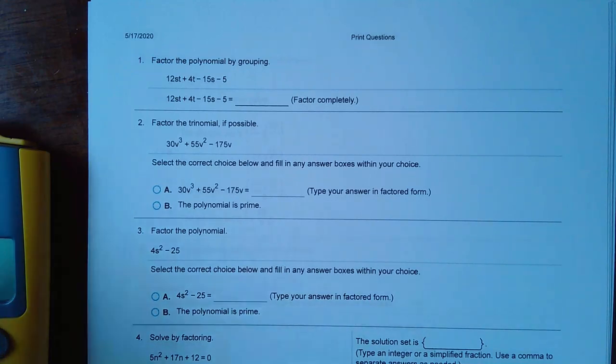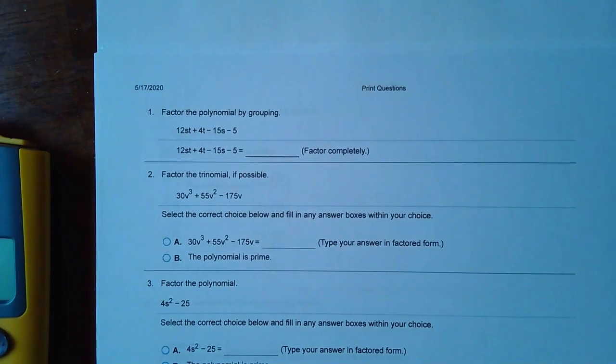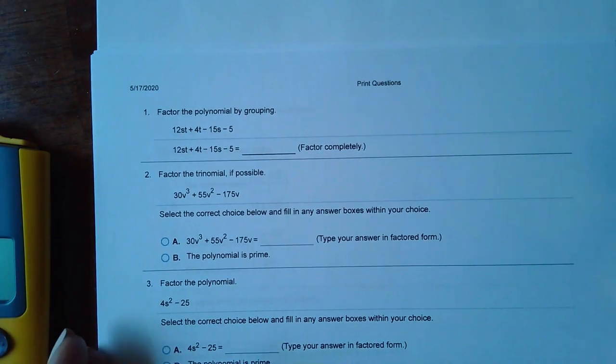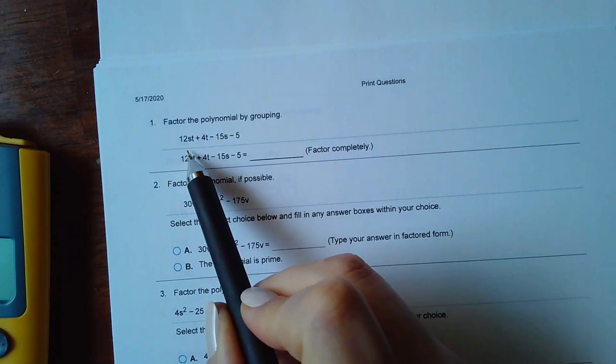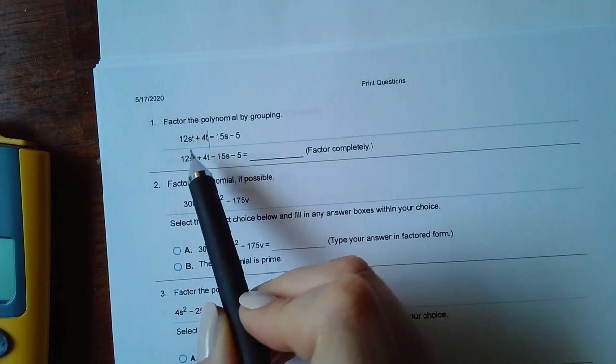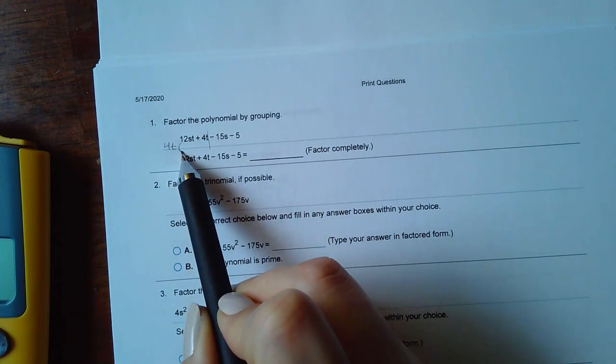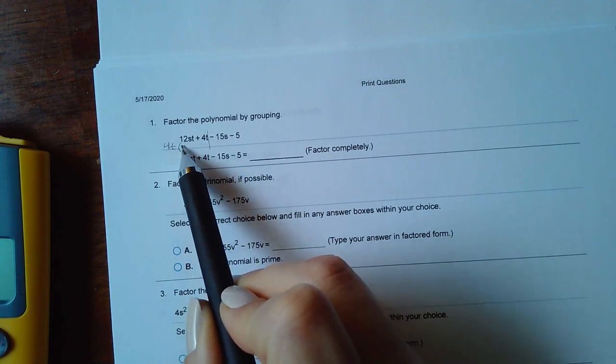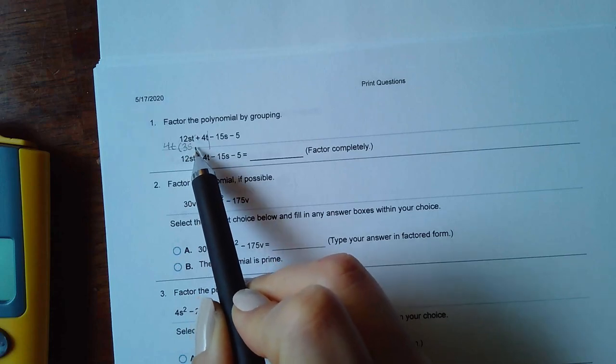I have some extra paper here in case I need it for any of the particular problems. For this problem it says factor the polynomial by grouping, so we're going to cut this in half here. The first half can be divided by 4 and it also has a t, so if I divide 12 by 4 I get 3, if I divide st by t the t's cancel I have s, and 4t divided by 4t is just 1.